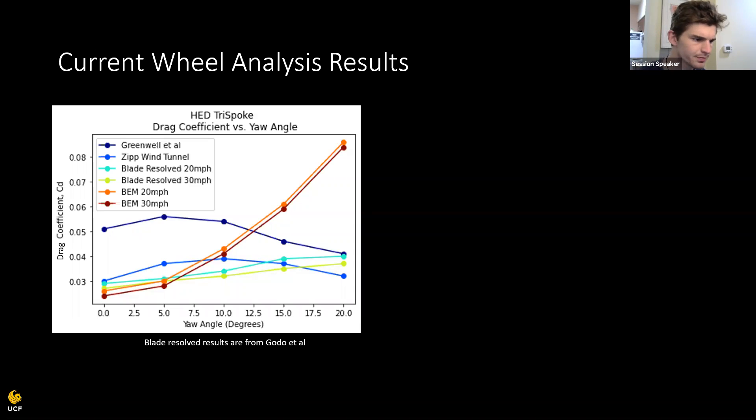Here are our current results. So the top blue line, that is wind tunnel data from Greenwell. The light blue line is from Zip Speed Weaponry, and that is also wind tunnel data. This light blue and this yellow line are from Godo, Matthew Godo. He ran a study and used DDES to solve this. And these are our results. We used Spalart-Allmaras turbulent model. And of course, coupled with BEM. Now it starts to break down past this critical yaw angle of attack. And we'll get into the reason of that later. You see that the model seems to be pretty consistent when the spokes aren't playing too much of a role. However, once the spokes start to play a role, the model seems to start to break down.